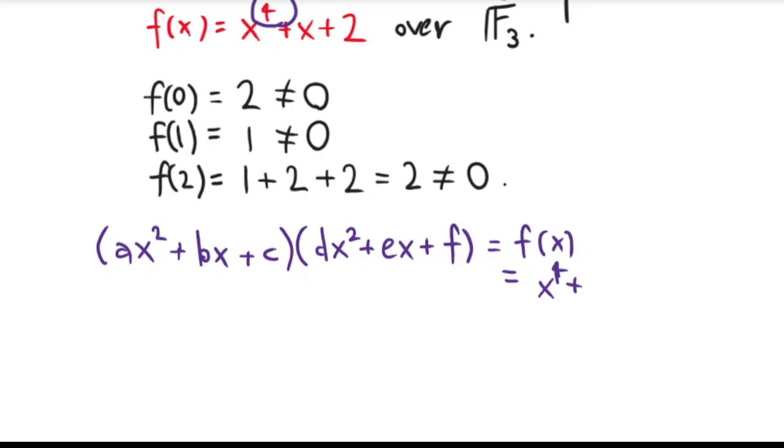So f(x) doesn't have any linear factors, but maybe it has two quadratic ones. So let's see what this would mean. So f(x) is x to the 4th, remember, plus x plus 2. And if you literally just distribute this, so there's other ways to do this, but you can just directly see what's happening by distributing everything out. So you can see that the x to the 4th term here is coming from A times D. That's where that coefficient is coming from, so that has to be equal to 1.